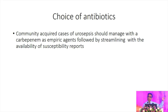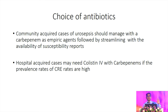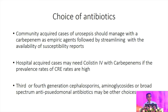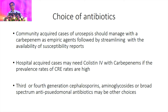For antimicrobial choice: for community-acquired urosepsis, we have carbapenem. For hospital-acquired urosepsis, we can go for carbapenem; if resistance rates are high — especially looking at carbapenem-resistant Enterobacteriaceae — something like colistin or tigecycline. If you do not have those options, you can go for third- or fourth-generation cephalosporins with aminoglycosides, or sometimes broad-spectrum anti-pseudomonal antibiotics like piperacillin-tazobactam or ticarcillin-clavulanic acid.